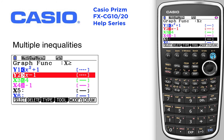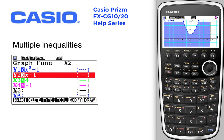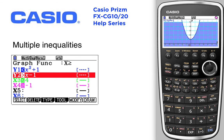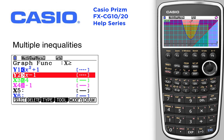We're going to hit draw F6 to see what we get. I'd like to see a little bit more up on the screen, so I'm just going to toggle up to be able to see more of the upper part of the screen.